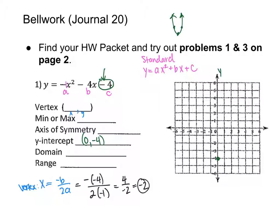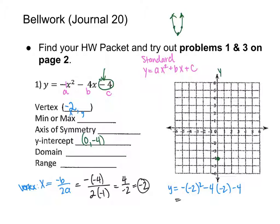Now that x is negative two, I need to find y by plugging x into the equation. So y = −(−2)² − 4(−2) − 4. Using order of operations: inside the parentheses first — can't simplify further — then exponents. Negative two squared is positive four, but there's a negative outside, so I bring that down. Do not distribute the exponent inside the parentheses.